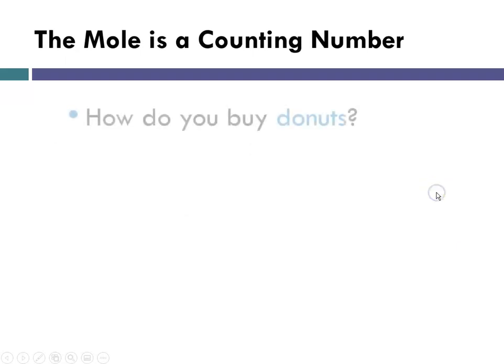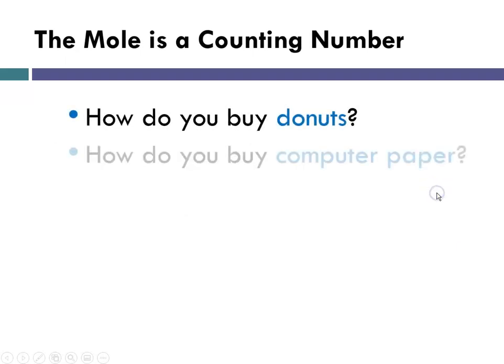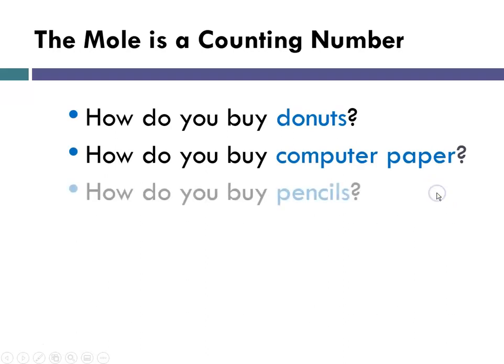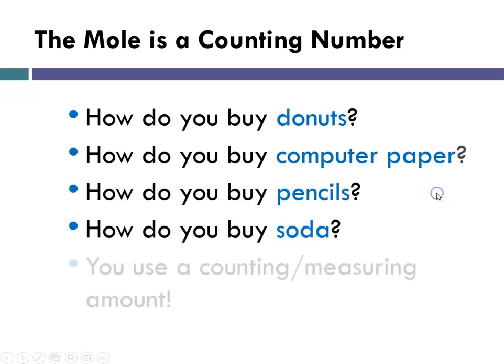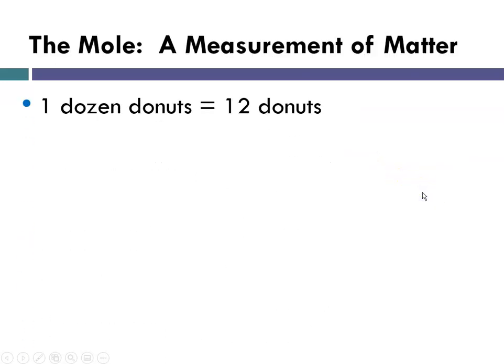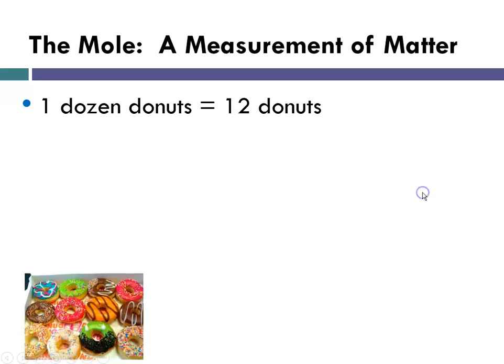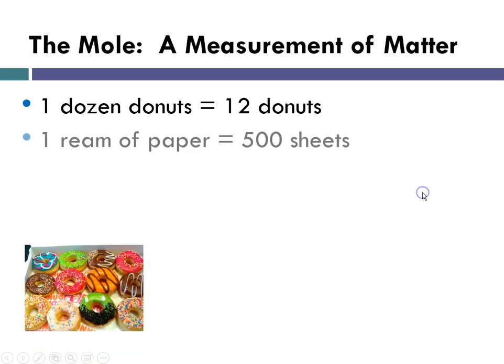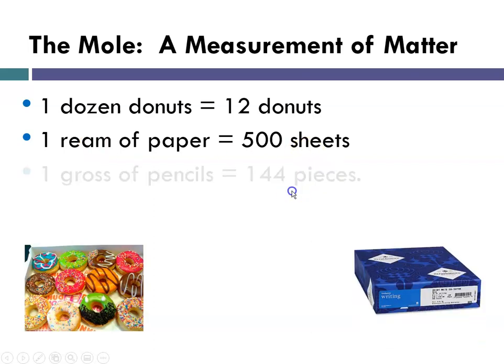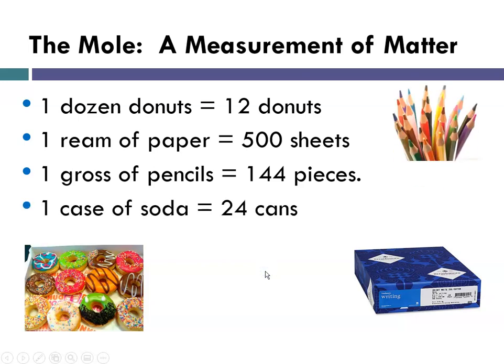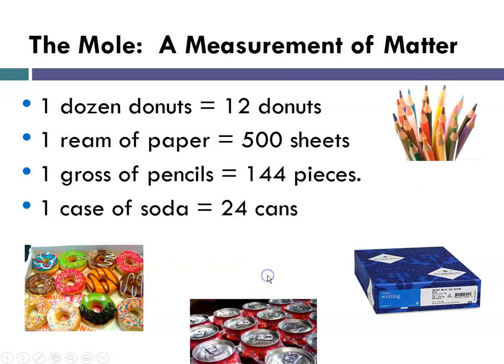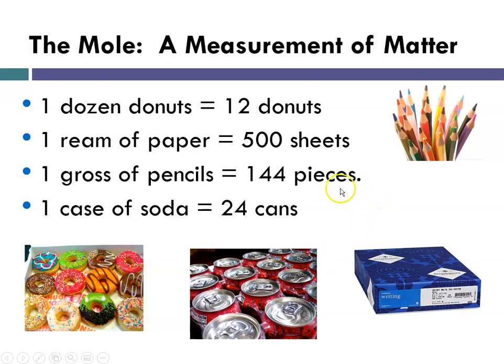So the mole is a counting number. So how do you buy doughnuts? How do you buy computer paper? How do you buy pencils? How about soda? You use a counting measuring amount. So for instance, a dozen doughnuts is 12 doughnuts. That's a counting number. A ream of paper, ream means 500 sheets. A gross of pencils means 144. And a case of soda is equal to 24 cans. So all of those are examples of counting measures.